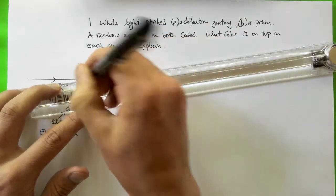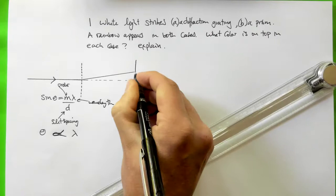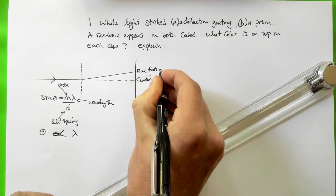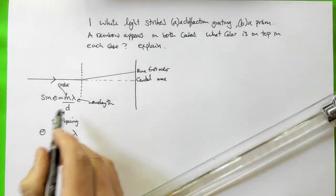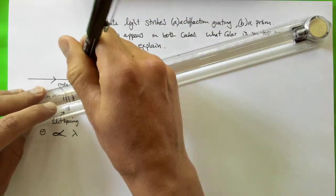So let's just draw in the position where the first order will appear for say blue. And then let's draw in red for the first order. Red light has a longer wavelength than blue light, so red light will be bent by a larger angle.